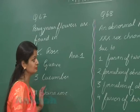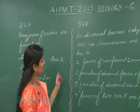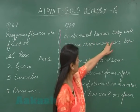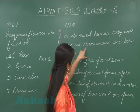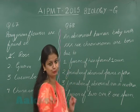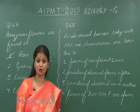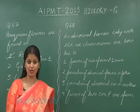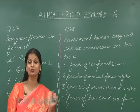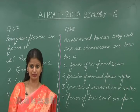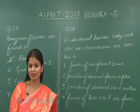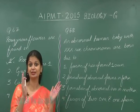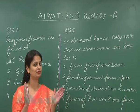Question number 68: an abnormal human baby with triple X sex chromosomes is born due to what? In a normal female there is presence of 2X chromosomes, but here instead of 2 there is trisomy — the presence of 3X chromosomes. This type of condition occurs due to non-disjunction, that is non-separation of chromosomes.